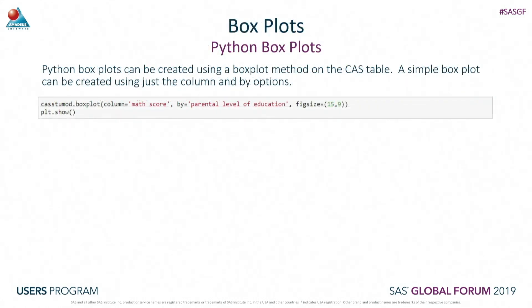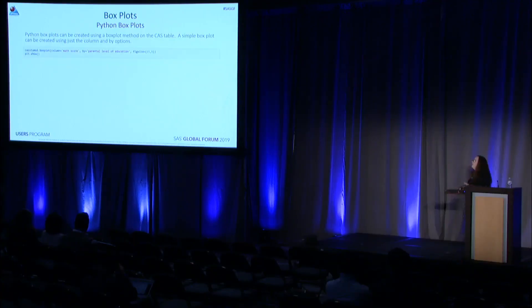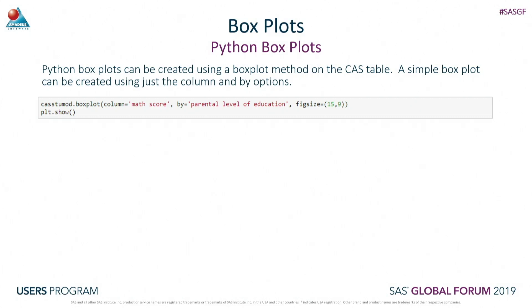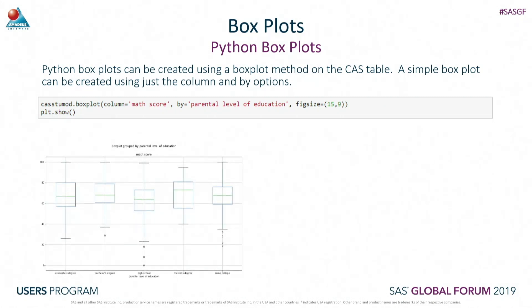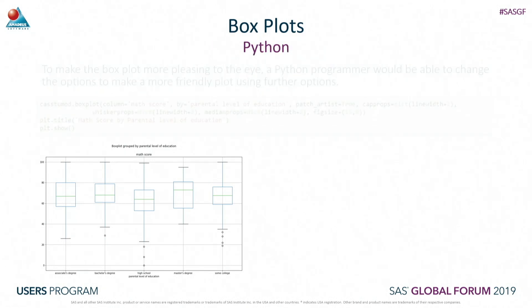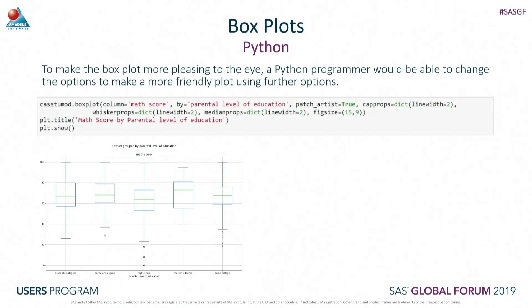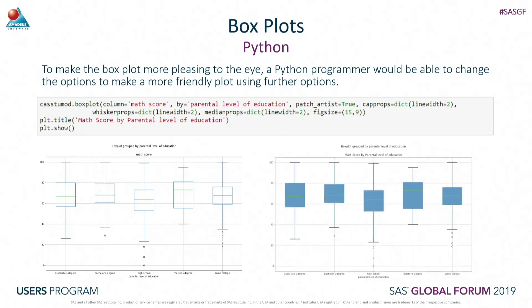Now I've got multiple options for my visualizations. Python boxplots can be created using a boxplot method. A simple boxplot is created by specifying a column, and I've added an optional 'by' - I want to look at the math score by parental level of education. The default boxplot looks like this, but it's not the most visually appealing. With a bit more coding - adding options like patch artist and different definitions - I can create a better version, but it does seem like a lot of coding.